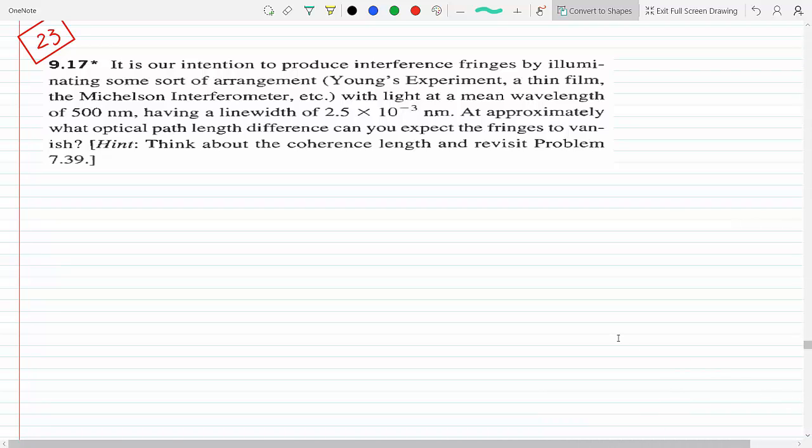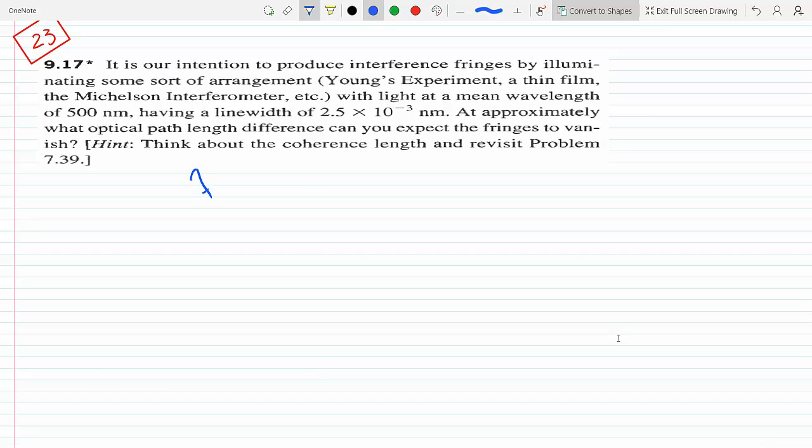The question here is to figure out the optical path length difference that you expect the fringes to vanish by, illuminating some sort of arrangement like Young's experiment with light. We have the mean wavelength, lambda mean.